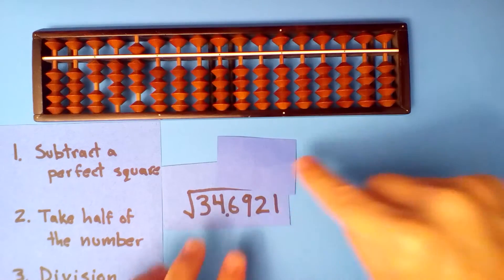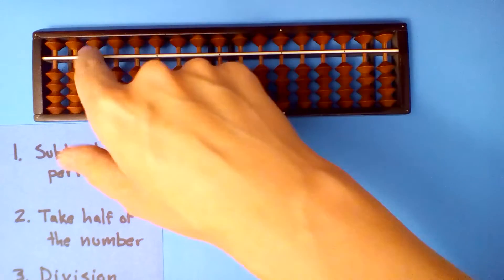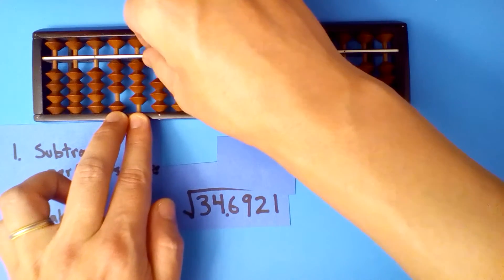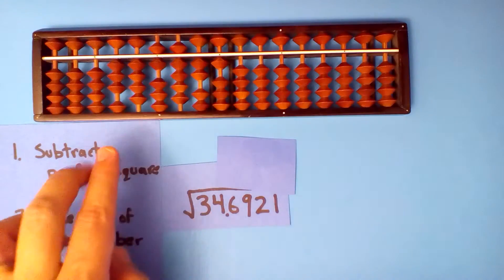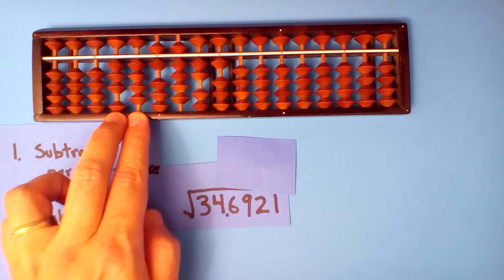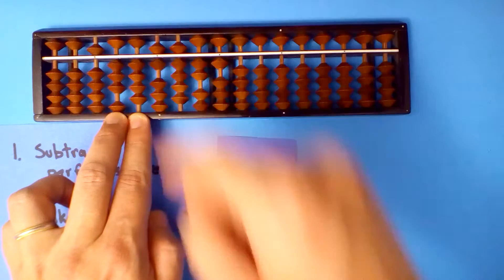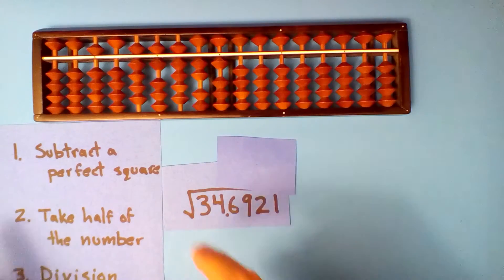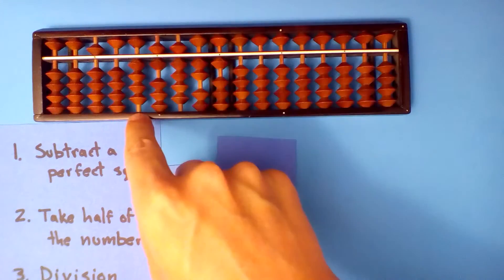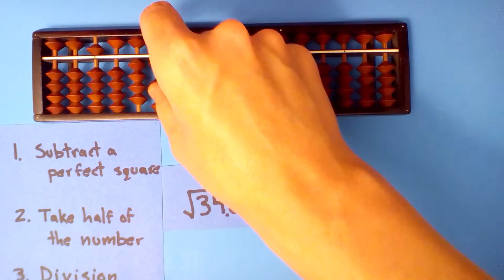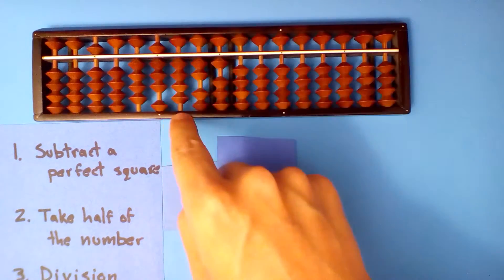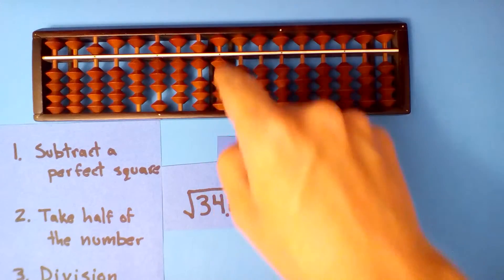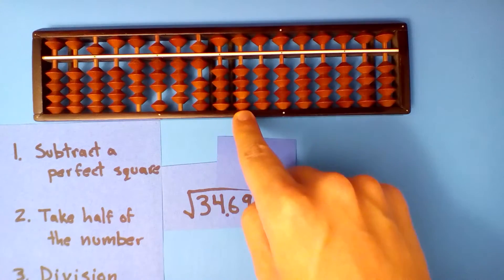The square root of 34.6921. Our tens and ones: three-four. And the decimals: 6, 9, 2, 1. Subtract a perfect square: six squared is too much, so five. Five squared is twenty-five, subtract twenty-five. Take half of what's left. Half of 9 is 4 with one left over. Half of 16 is 8. Half of 9 is 4 with one left over. Half of 12 is 6. Half of 1 is 0 with one left over. Half of 10 is 5.